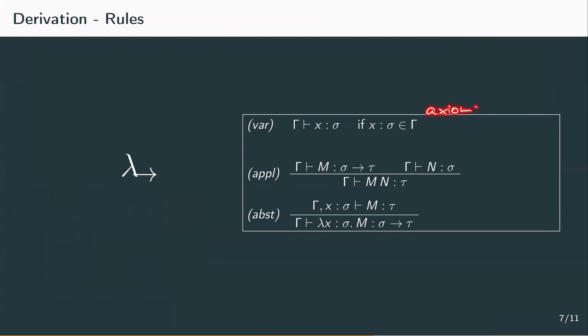The second rule, called the application rule, has two premises. If gamma yields that m is of type sigma to tau — so m is an abstraction of some sort — and gamma also yields that n is of type sigma, then gamma yields that m applied to n is of type tau. Note that we always use the same context, and that n has the type sigma which is the input type of m. This is quite intuitive and resembles the modus ponens. If you want to know more about the correspondence of the lambda calculus and logic, please refer to chapter 7.